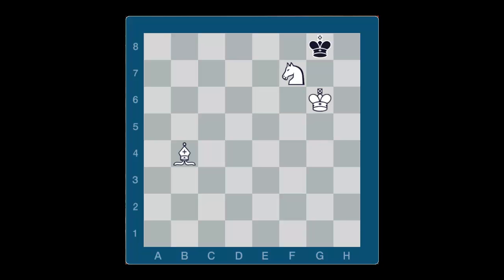In this position, you can combine the bishop and knight to mate in two. That's right. Knight h6 check forces the black king into checkmate.